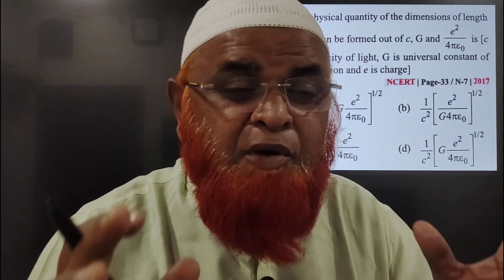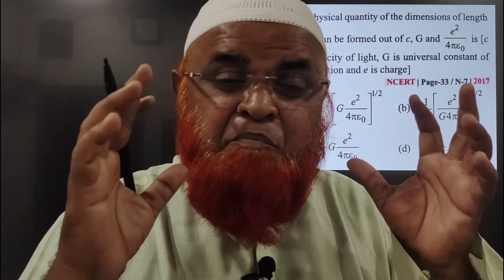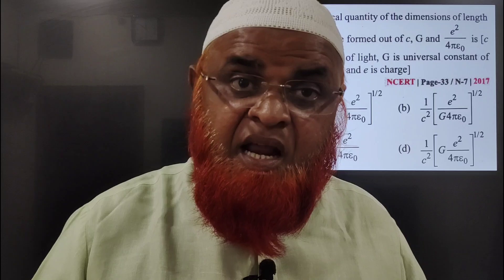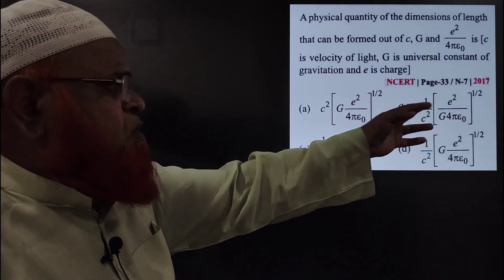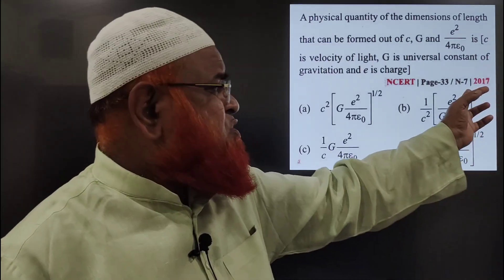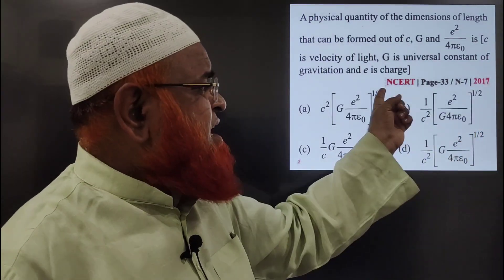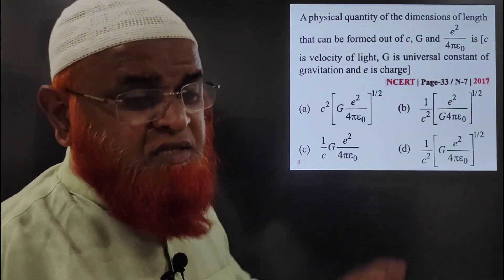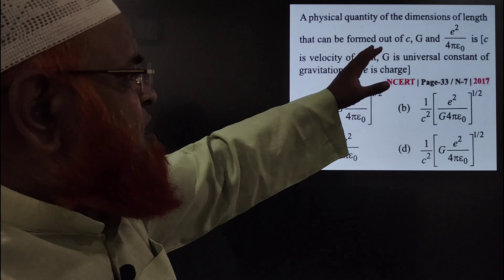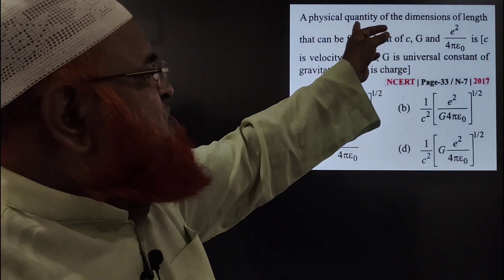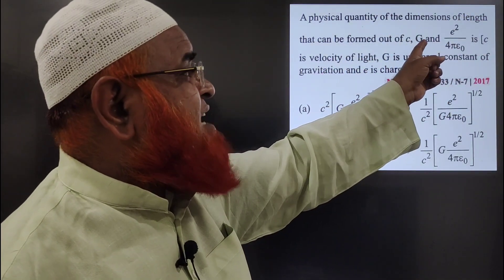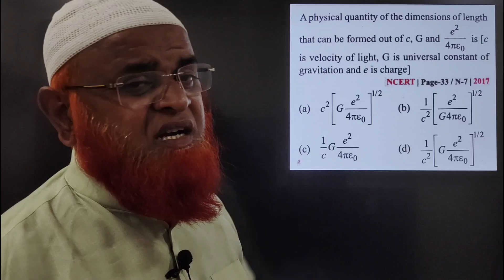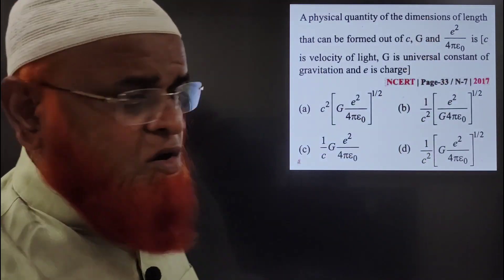My dear students, let us solve the problem of measurements in a different style — you will not get this style on the total internet. This is a previous year question from NEET 2017, NCERT page number 33. The concept is available here. We need to find the dimensions of length in terms of velocity of light, gravitational constant G, and E² by 4π epsilon naught.